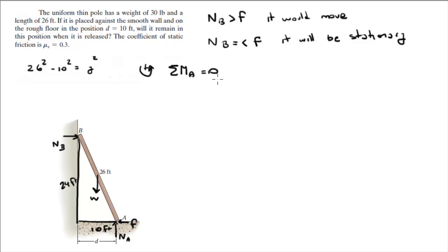Sum of the moments at A is equal to zero if it's stationary. So zero equals the weight times 5. Why 5? Because that 5 is the lever arm at the half of 10, which is 5, minus NB times 24, because 24 is the lever arm right here with a length of 24. So you solve for NB and you get NB equals 6.25 pounds.